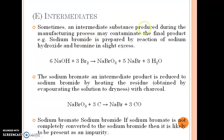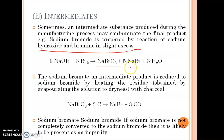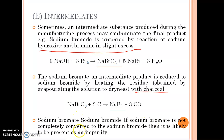Intermediates: sometimes an intermediate substance produced during the manufacturing process may contaminate the final product. For example, sodium bromide is prepared by the reaction of sodium hydroxide and bromine in slight excess: 6 NaOH + 3 Br₂ gives NaBrO₃ plus 5 NaBr plus 3 H₂O. The sodium bromate intermediate is reduced to sodium bromide by heating the residue obtained by evaporating the solution to dryness with charcoal: NaBrO₃ heated with charcoal gives NaBr plus carbon monoxide. If sodium bromate is not completely converted to sodium bromide, it is likely to be present as an impurity.